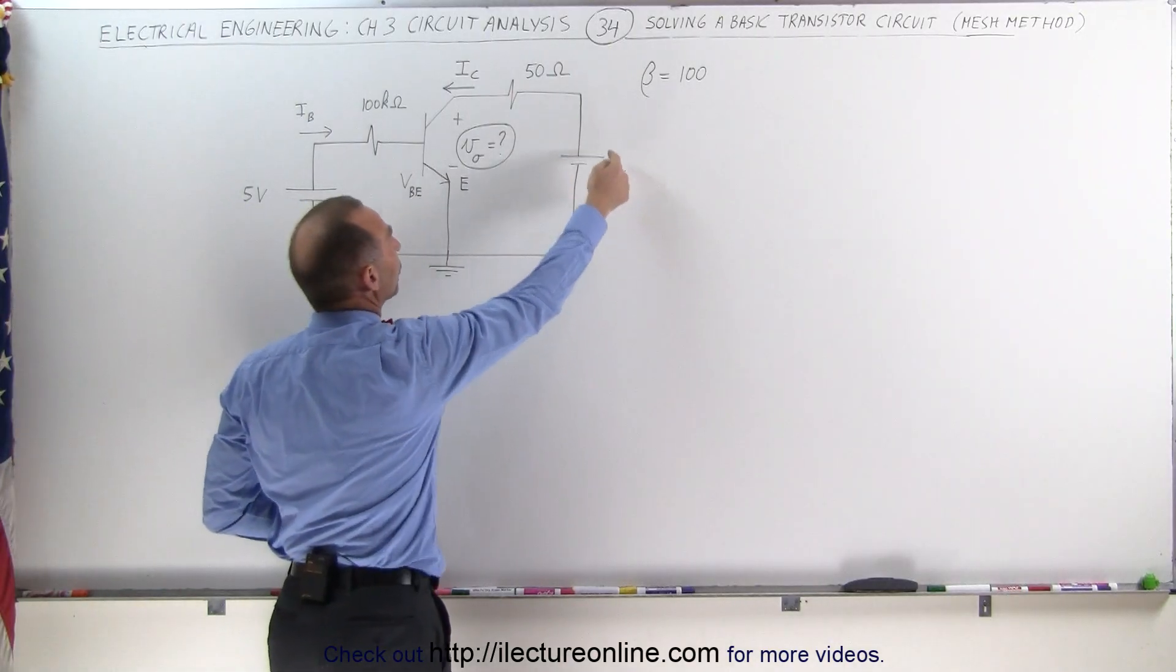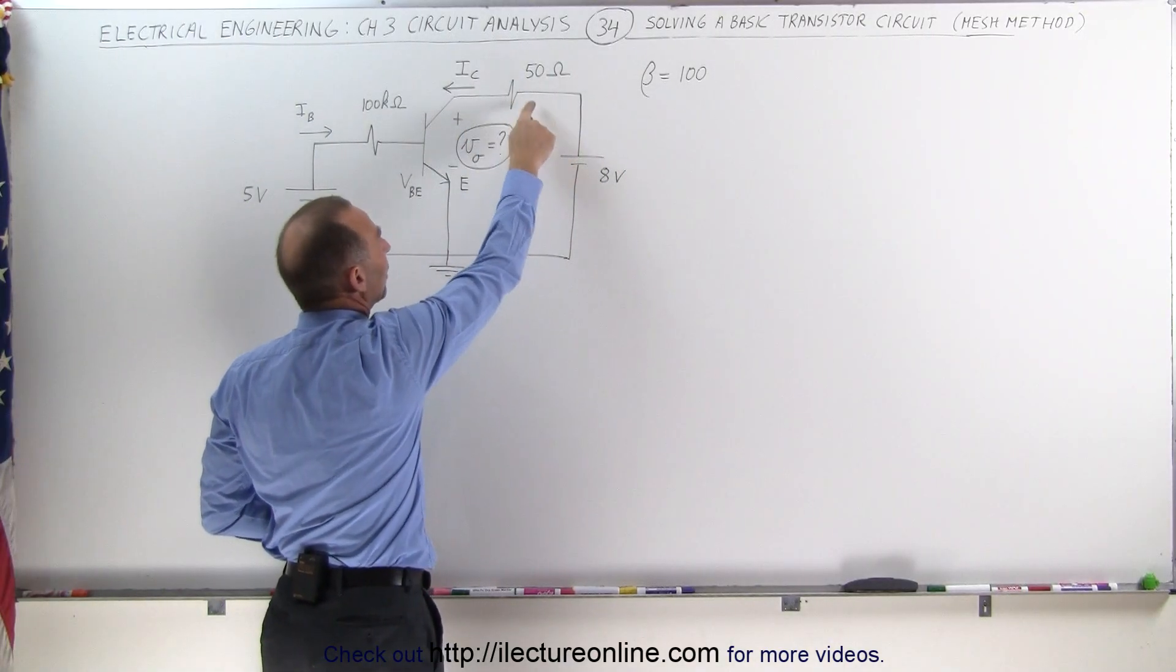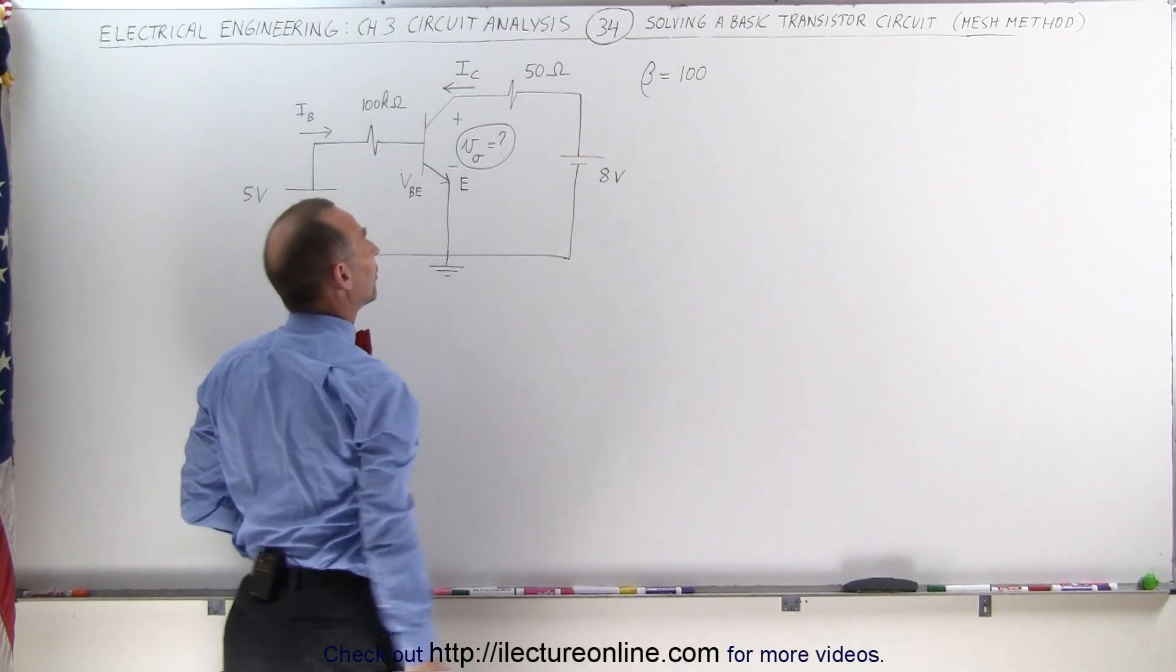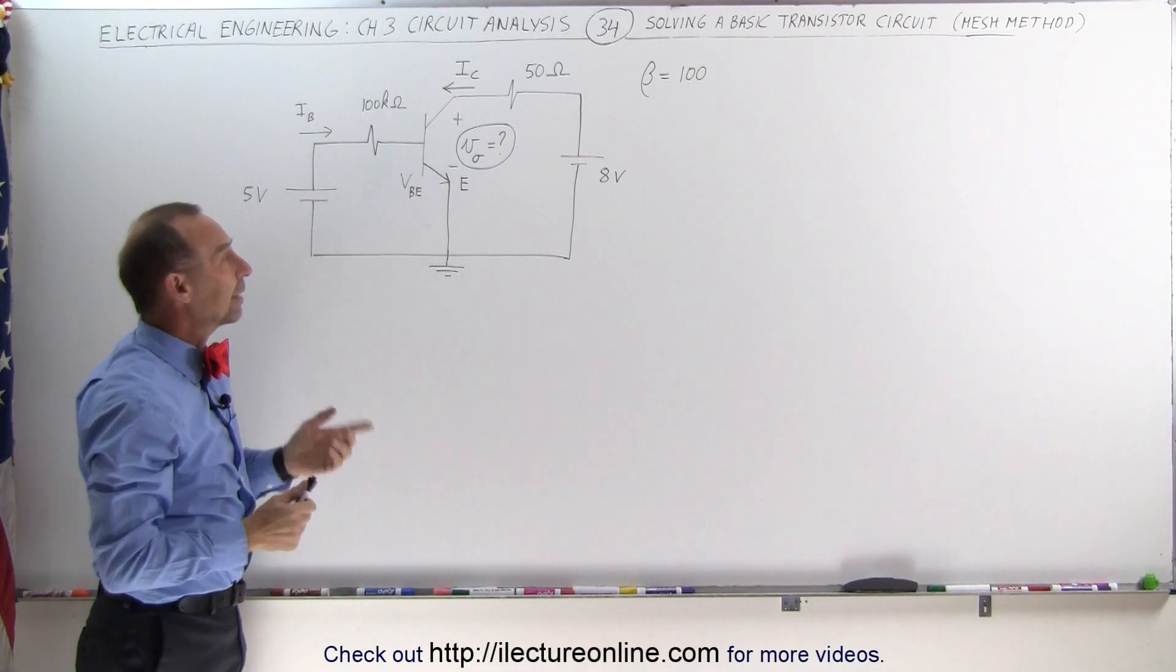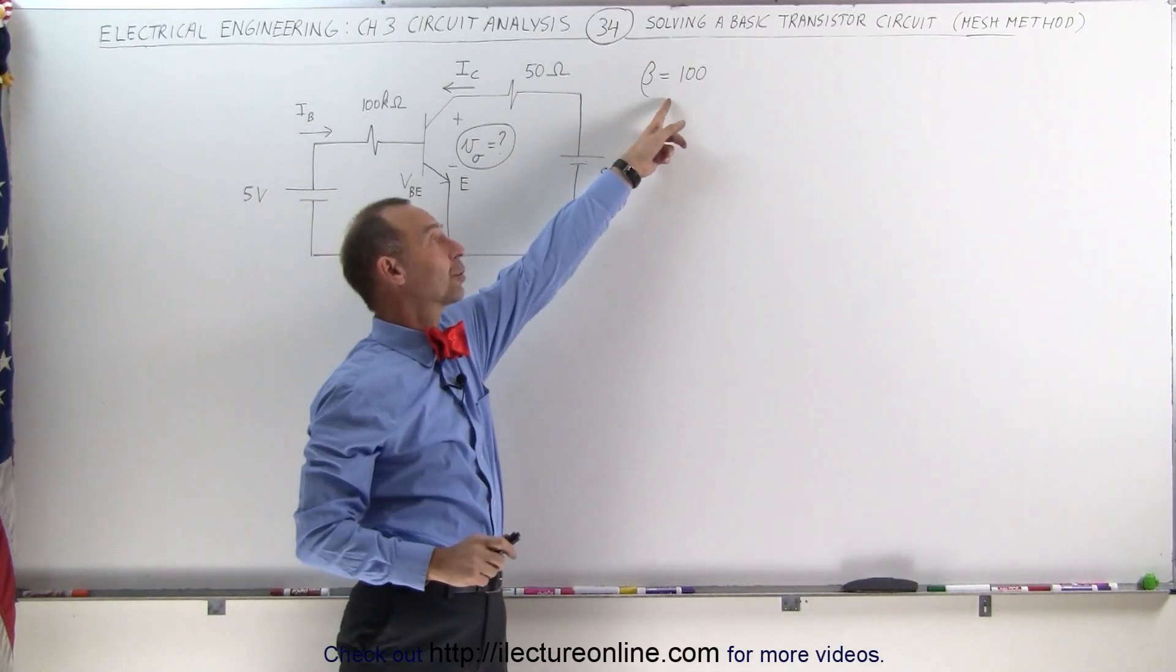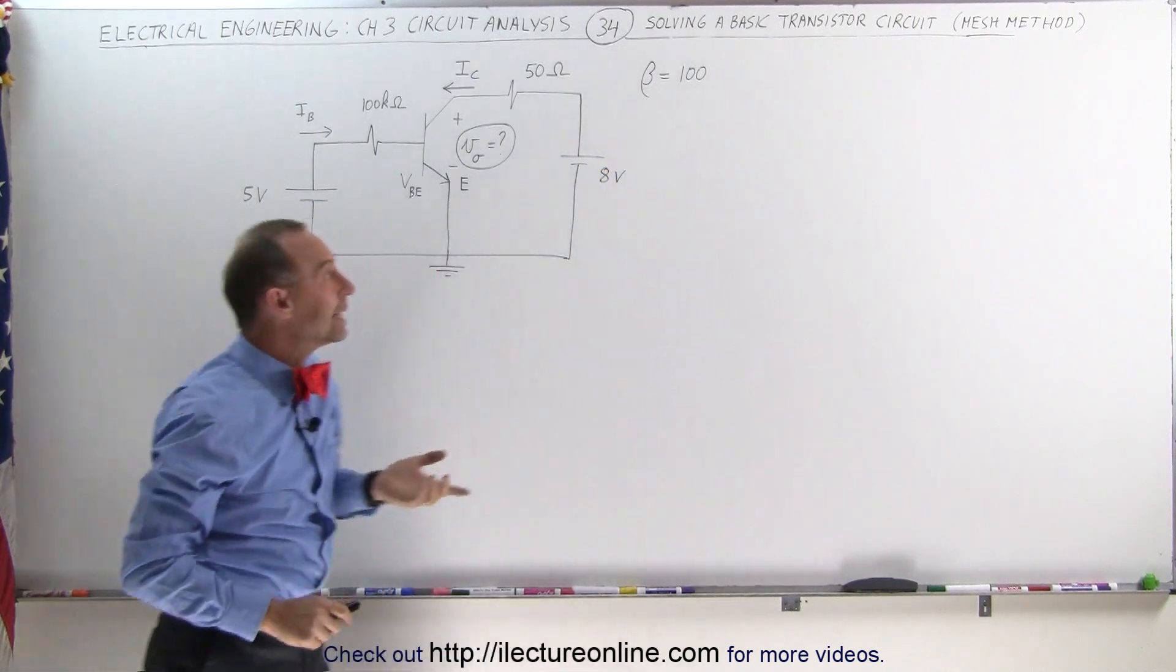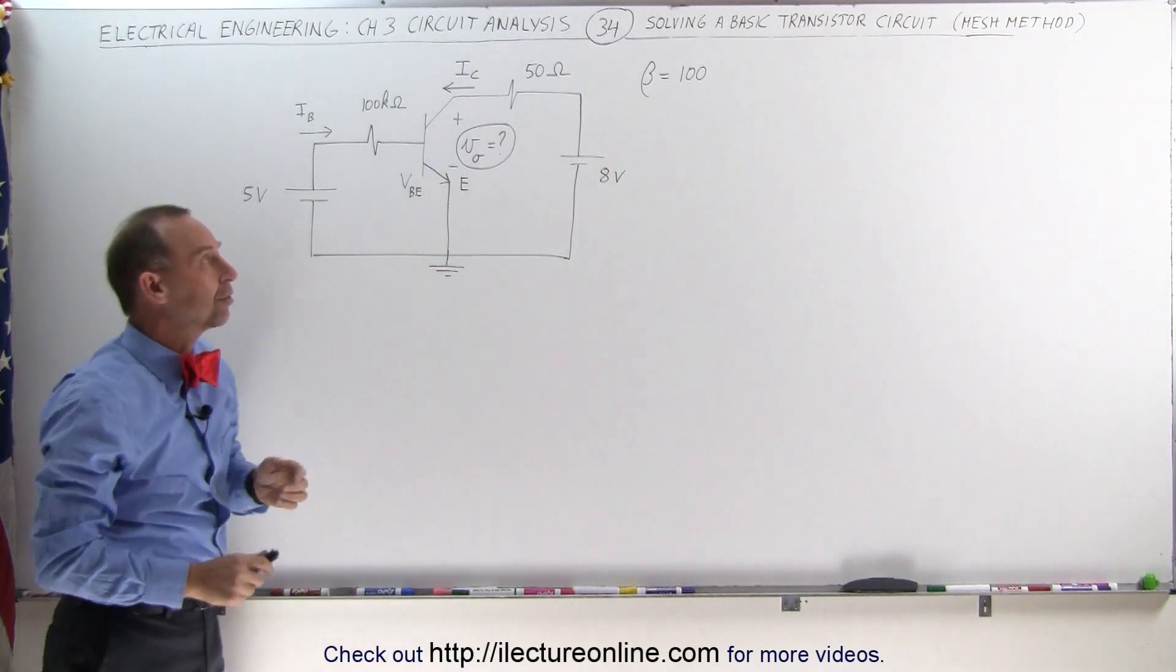We have an 8 volt source driving current to the collector. We have a 50 ohm resistor controlling that current, and also knowing that beta, the current gain between the collector current and the base current, is 100 to 1.